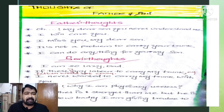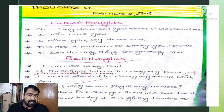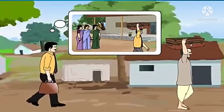Now let us see how to describe the thoughts of a person. In the lesson 'Journey,' the father and son have thoughts in their minds that were not given in the textbook. If you are asked to write the thoughts of the father or son from that lesson, you have to know how to write them. So here we go with the thoughts of the father and son.